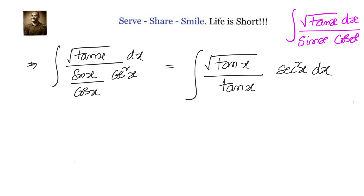By this point it is clear that we should substitute tan x equals t, because sec squared x dx will become dt, making the integral much simpler. So let tan x equal t.